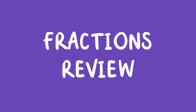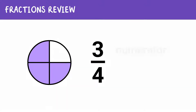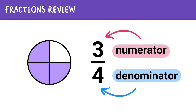But first, let's review what we already know about fractions. A fraction represents how many parts of a whole there are. A fraction has two parts: the numerator, the top number that tells us how many parts we have, and the denominator, the bottom number that tells us how many equal parts the whole is divided into. Here we have 3 fourths — 3 is the numerator, and 4 is the denominator.